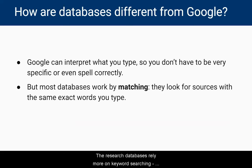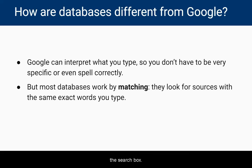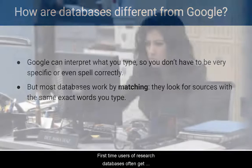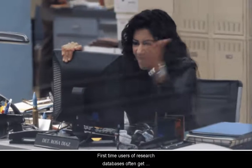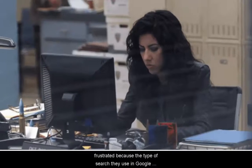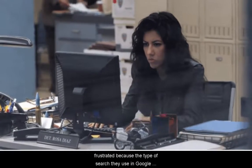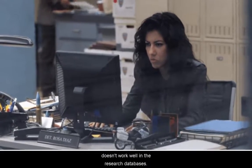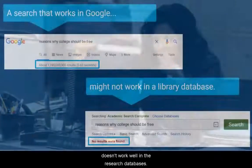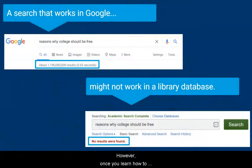The research databases rely more on keyword searching, matching your search results to what you actually typed in the search box. First-time users of research databases often get frustrated because the type of search they use in Google doesn't work well in the research databases.